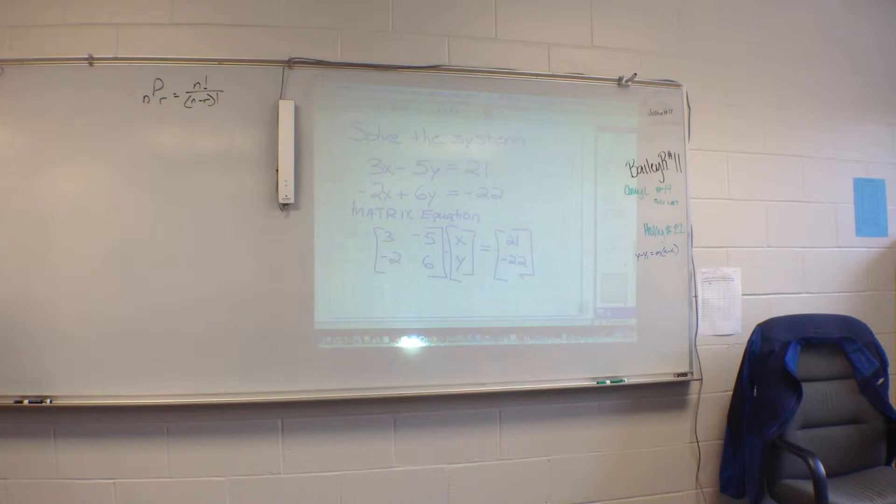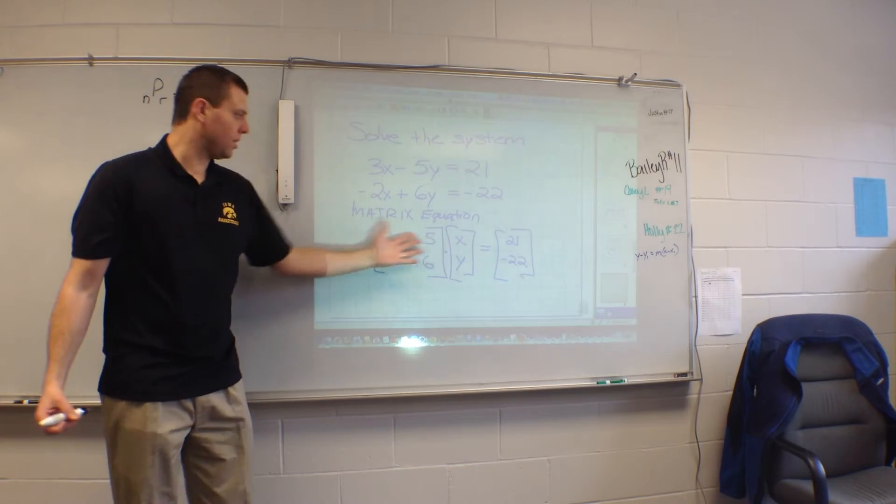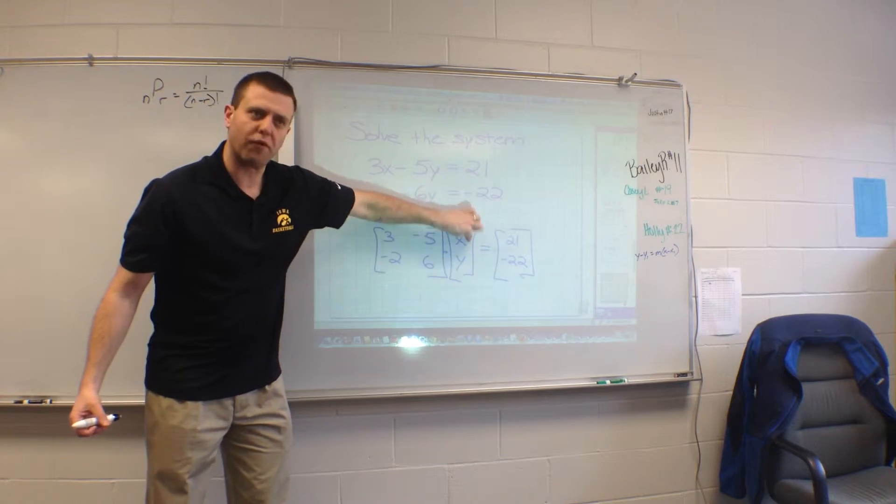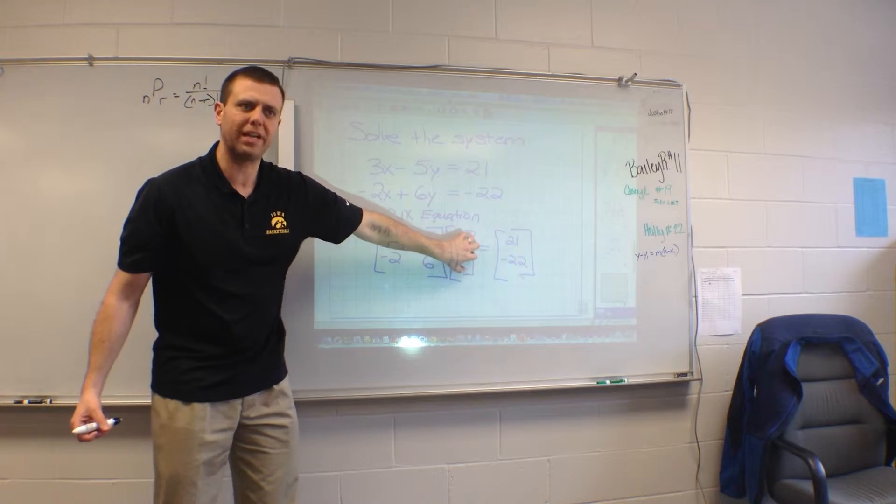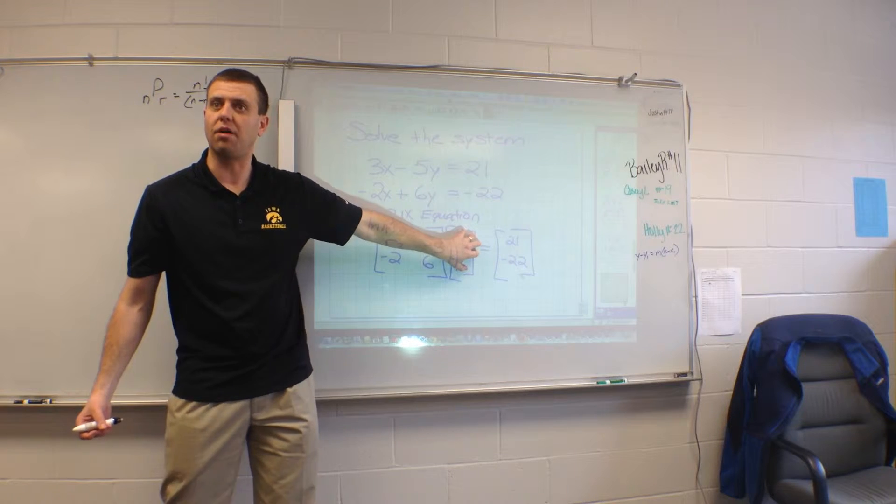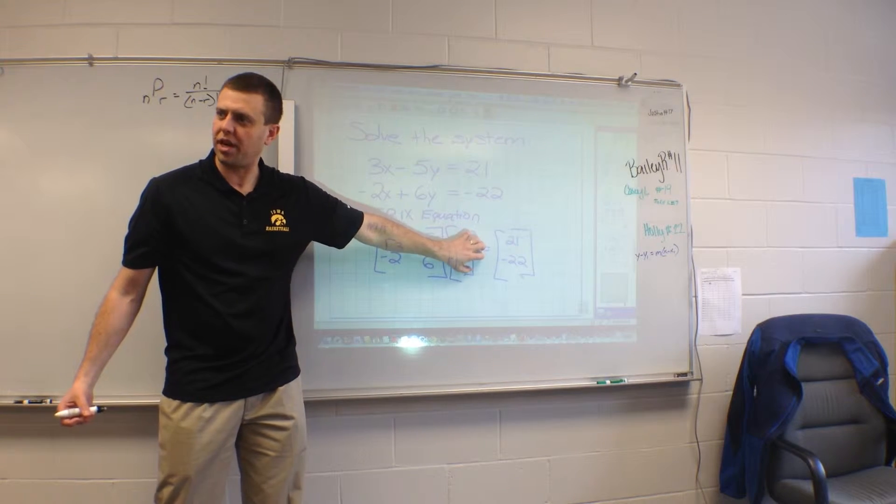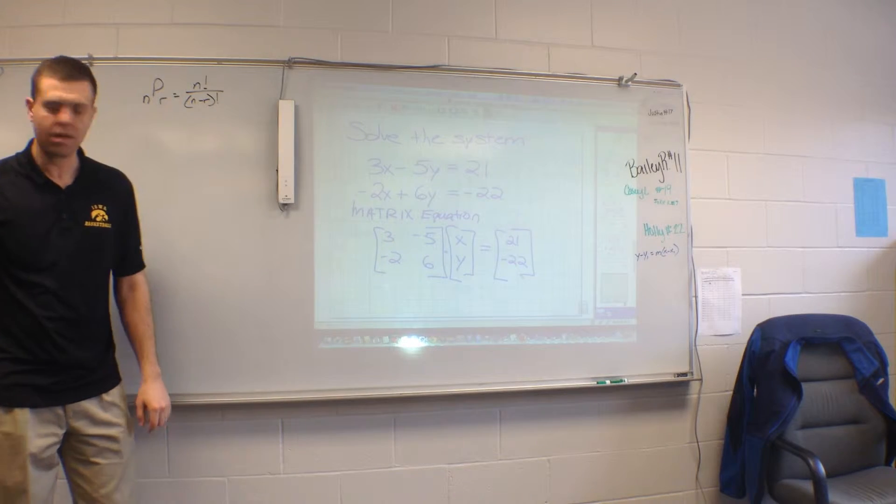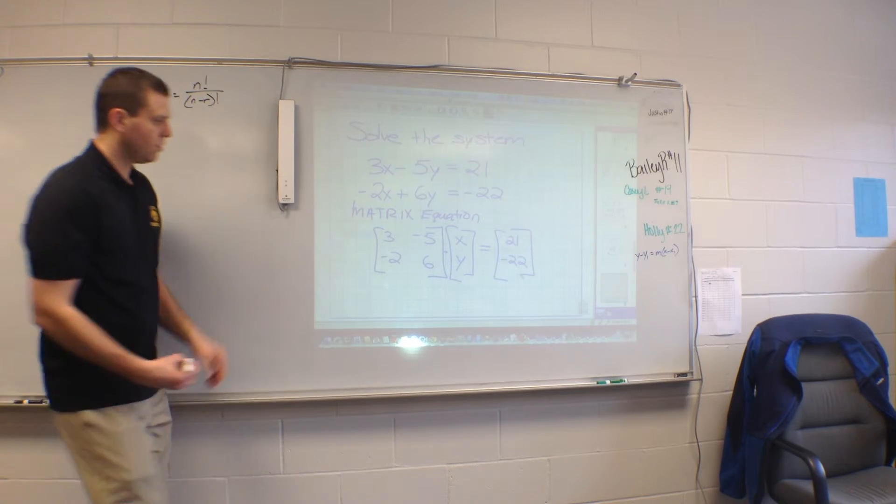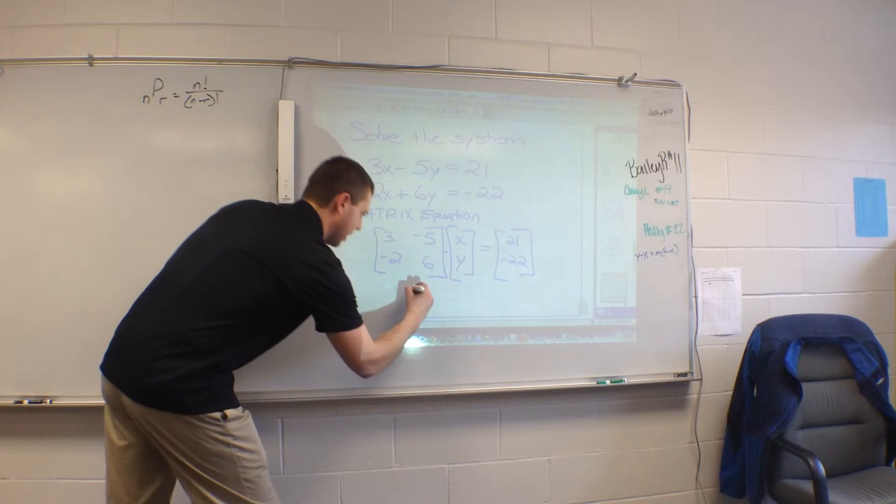So really, all we need to do in this matrix equation is solve for the variable. We need to get this matrix here by itself. We need to get this matrix right here by itself. Now, just for the heck of it, I'm going to call this matrix here, matrix A.